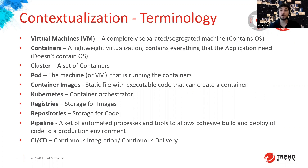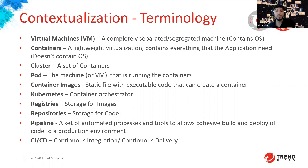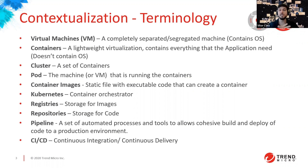A pipeline is a set of automated processes — imagine a factory where you place your code at the beginning and get a running application with all its feedback and guardrails along the way. For applications, code enters one way and we have a running application coming out the other. CI/CD stands for continuous integration and continuous delivery. When people say CI/CD they tend to use it interchangeably with CI/CD pipeline.